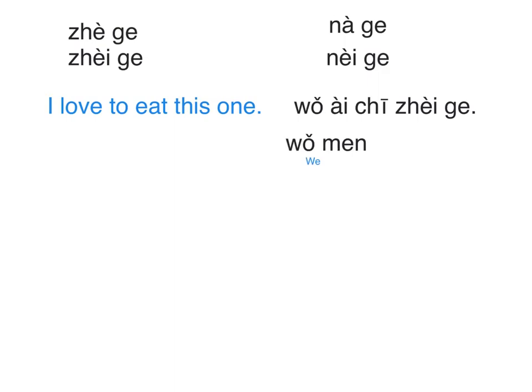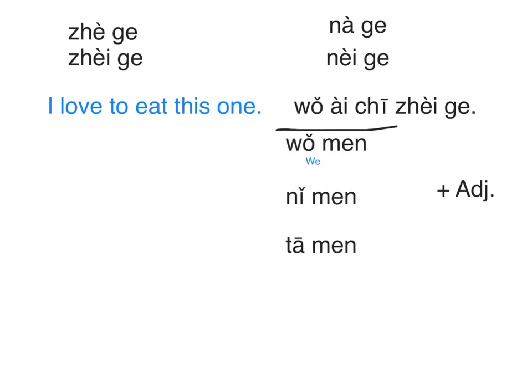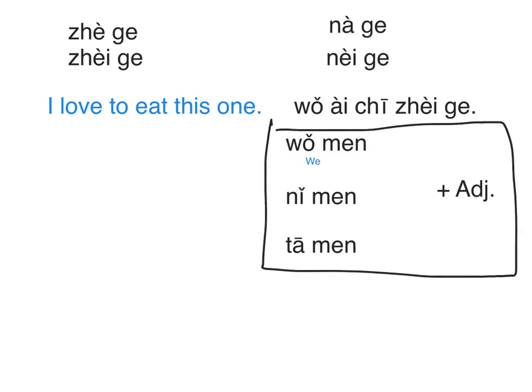When Chinese people need to say plural — for example 'we' — we say 我们. 我们好 means 'we are good'. When you hear 你们, that's plural 'you'. And you can guess how to say 'they/them': 他们.